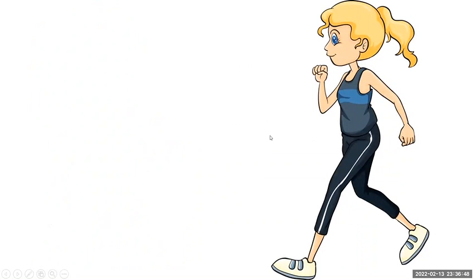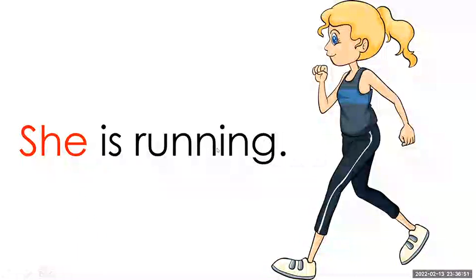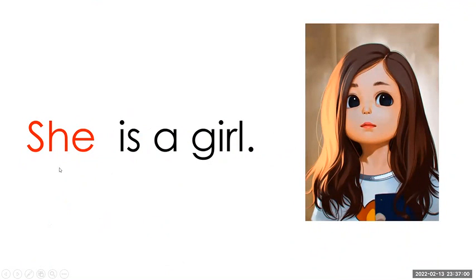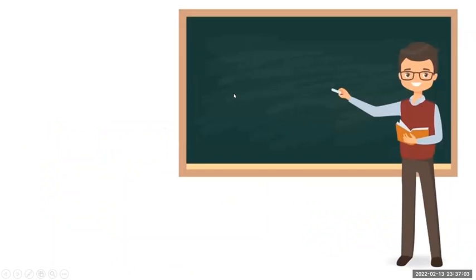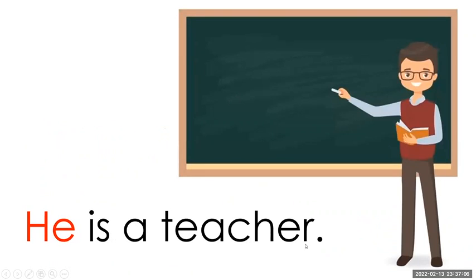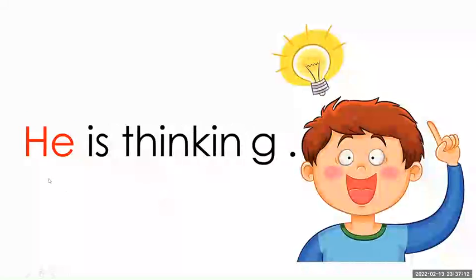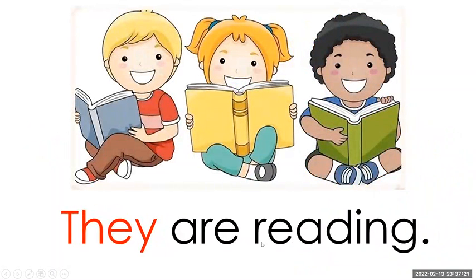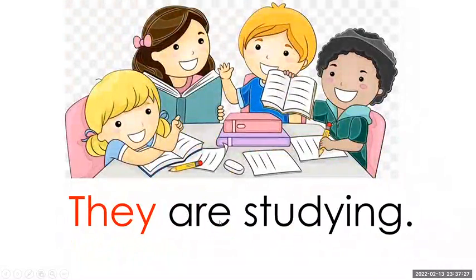So let's have sentence examples. She is running. She is a girl. He is a teacher. He is thinking. They are reading. They are studying.